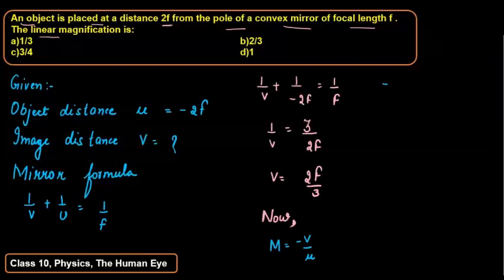So if I will simply fill here the values, then what is it? 2F upon 3, so I have now the value of V, and U's value is minus 2F, and it is also in minus in the formula. So how do we solve it? Simply, if you can see, if we want to solve it, then it would appear like this.